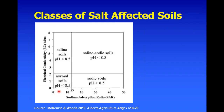From a publication we wrote a few years ago: when the SAR is less than 13 and the electrical conductivity is less than two, we call that soil normal. Once your EC is greater than two, that soil will be classified as saline. Once the SAR is greater than 12, it's classified as sodic.